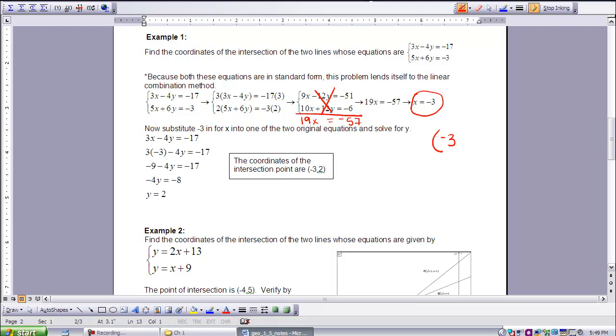Now I can take my -3 and substitute it into either one of my equations. I've chosen the first one. So 3 times -3 minus 4y = -17. 3 times -3 is -9 minus 4y = -17. Move the -9 over, which leaves me with -4y = -8. Divide both sides by -4, so y = 2. That's my second coordinate. So the coordinates of that intersection point are (-3, 2). That's the point that both lines have in common.